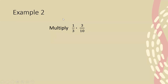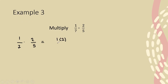Let's continue to the next example. Here we have 1/7 times 2/5 and we're asked to multiply. I'm going to rewrite this: 1/7 times 2/5. To multiply, I multiply my numerators together — so 1 times 2 — and I multiply my denominators together — so 7 times 5. 1 times 2 on the top gives me 2, and 7 times 5 gives me 35. So the answer is 2/35, and that is how I multiplied those two fractions.